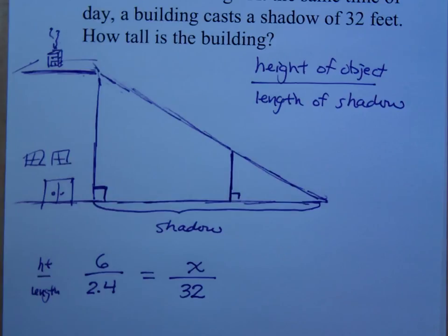Now look at this. That shadow is considerably longer than the shadow of the person. So I would expect that the height of the building would be a lot taller than the height of the person, right?